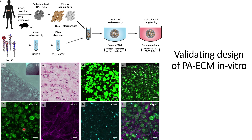They then checked alpha-SMA and CD68 markers. Macrophages, identified by CD68 signals, are found in a spherical or circular shape, while stellate cells identified by alpha-SMA are found in an elongated form. These observations with alpha-SMA and CD68 validate the expected morphology of the two cell types in the co-culture.